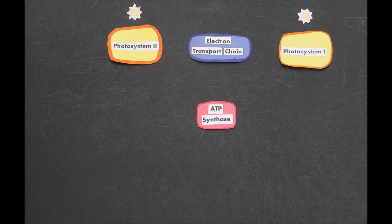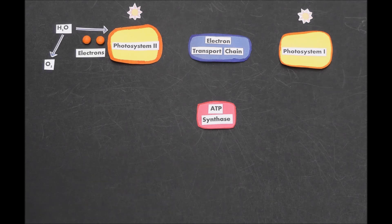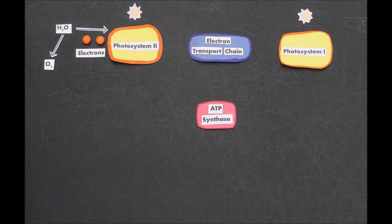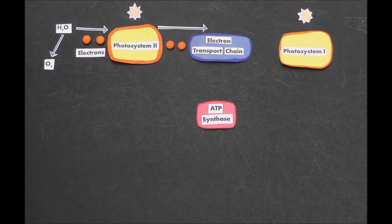Two photosystems that absorb light energy from the sun using chlorophyll, an electron transport chain, and an ATP synthase. Photosystem II has this enzyme that can strip electrons away from water, leaving behind waste oxygen. Those electrons are energized by light and passed on to the electron transport chain.